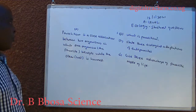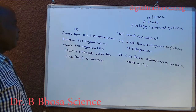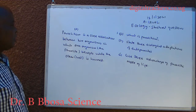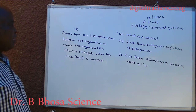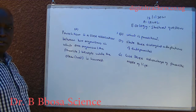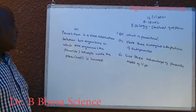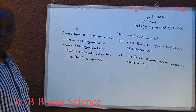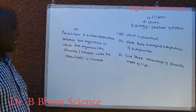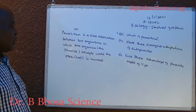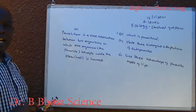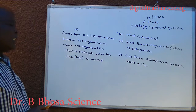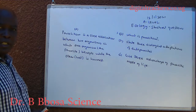A. Parasitism is a close association between two organisms in which one organism, the parasite, benefits, while the other, the host, is harmed.